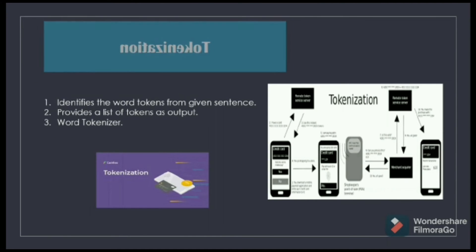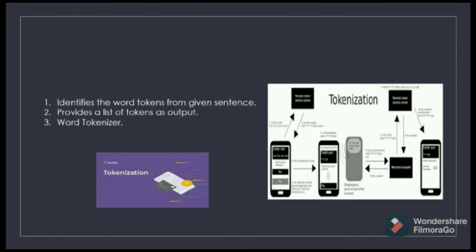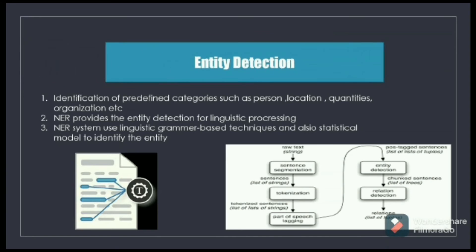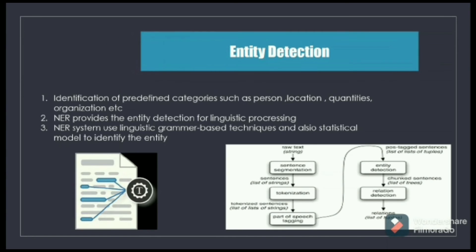Tokenization identifies the word tokens from a given sentence and provides a list of tokens as output — word tokenization. Entity Detection involves the identification of predefined categories such as person, location, quantities, organization, etc. NER provides entity detection for linguistic processing, and NER systems use linguistic grammar-based techniques as well as statistical modules to identify the entity.